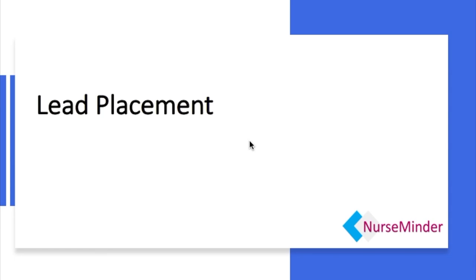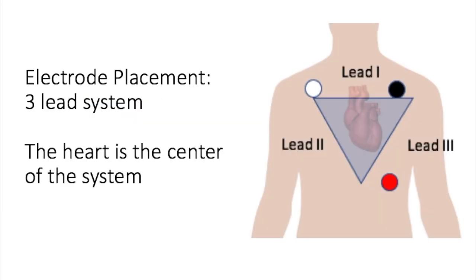Lead placement. In this module we will be looking at a three lead, five lead, and a twelve lead system and their paperwork that you would get with them. Notice how the heart is positioned in the chest here — this is to highlight the information covered in our anatomy and physiology section, and it is influencing why we put the leads where we do.